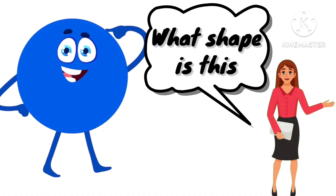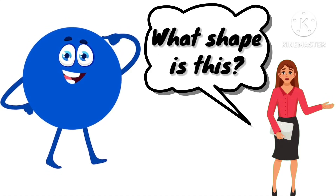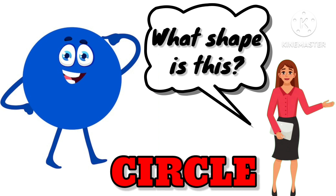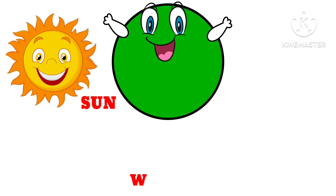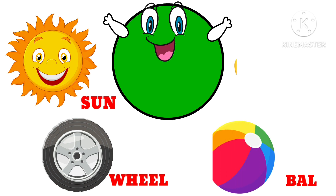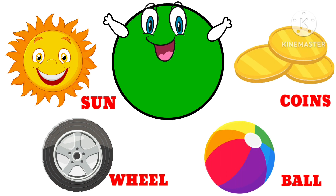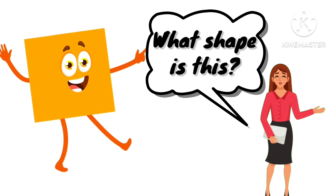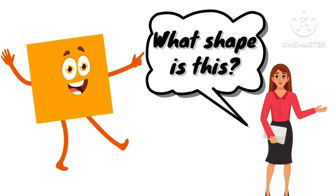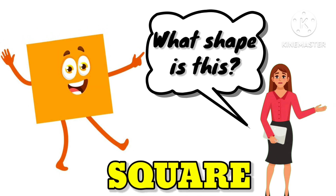What shape is this? This is a circle. So kids, let's learn about the objects that are circle in shape. Examples: Sun, wheel, ball, and coins are all circle in shape.